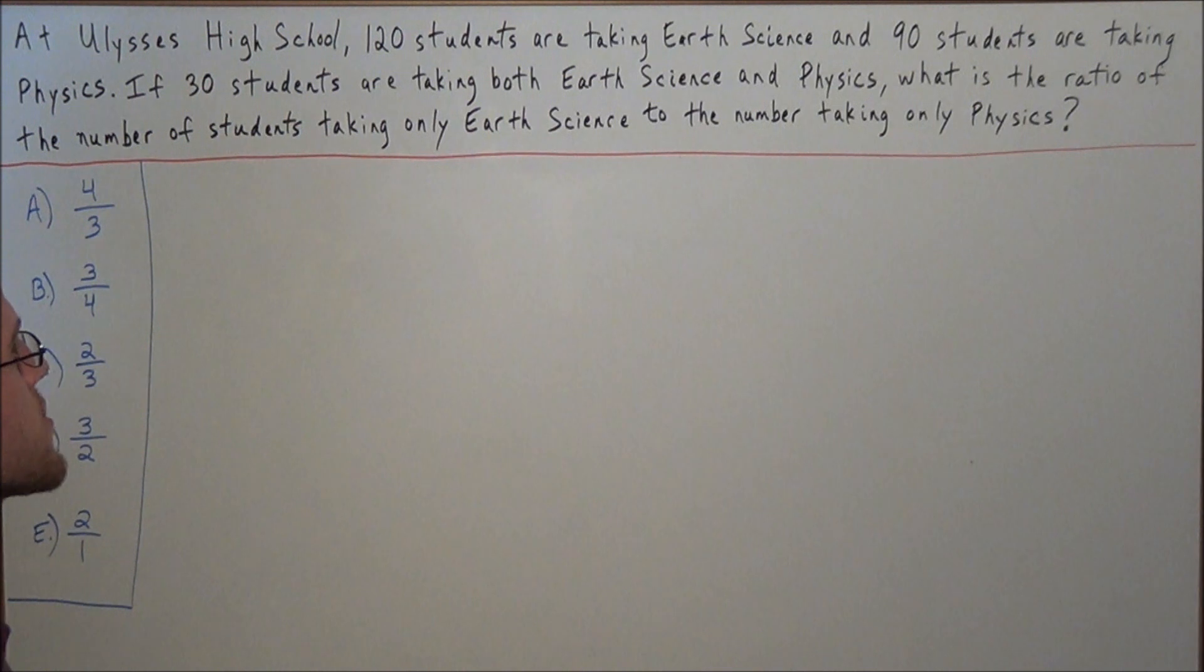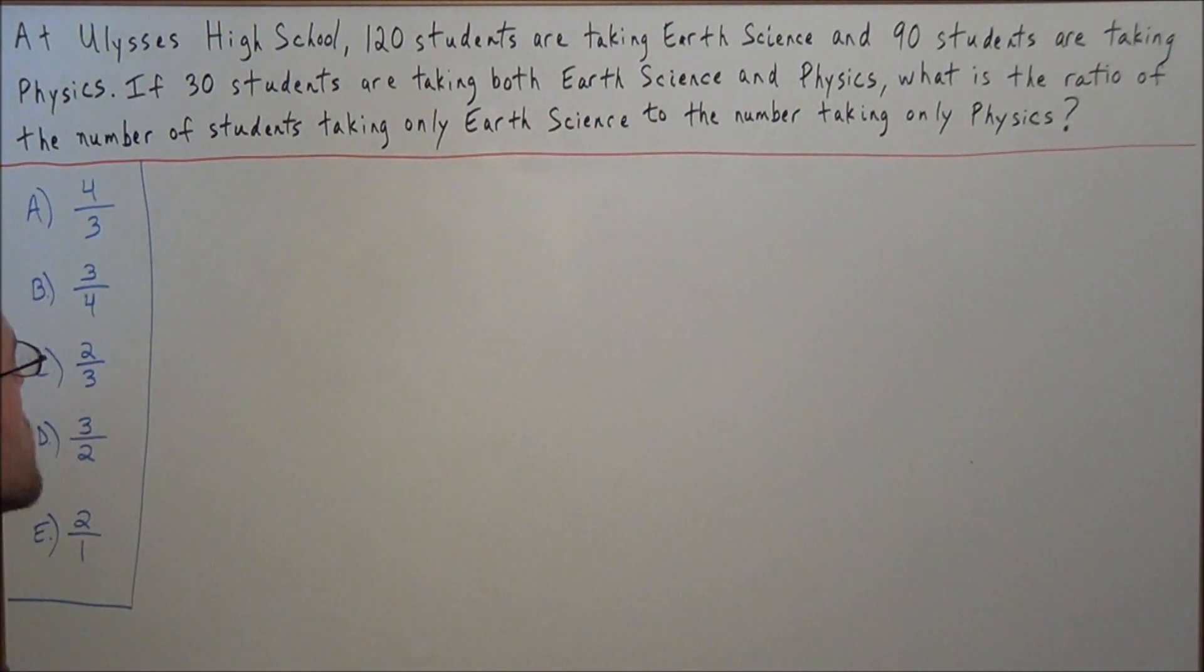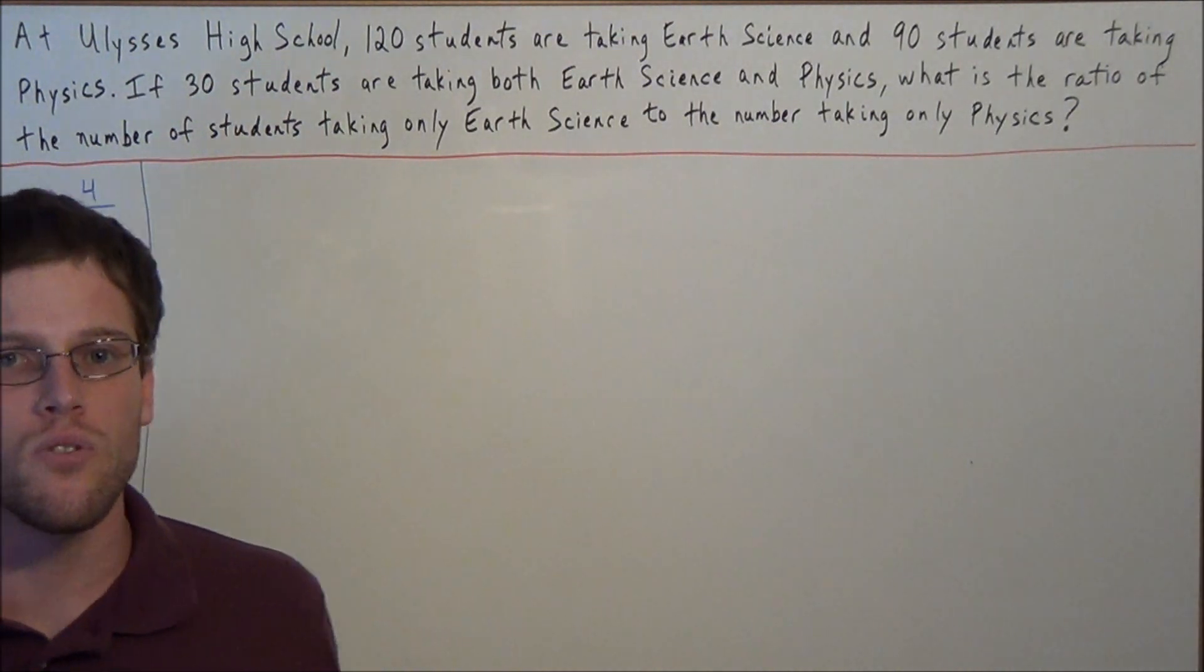So we have, at Ulysses High School, 120 students are taking Earth Science and 90 students are taking Physics. If 30 students are taking both Earth Science and Physics, what is the ratio of the number of students taking only Earth Science to the number taking only Physics?